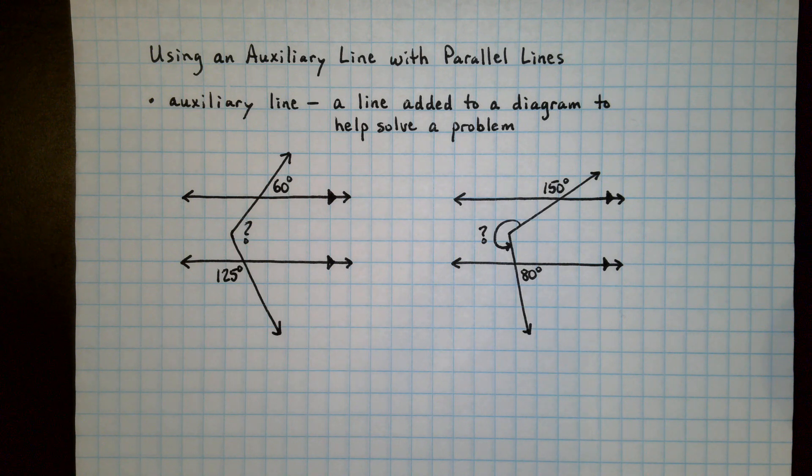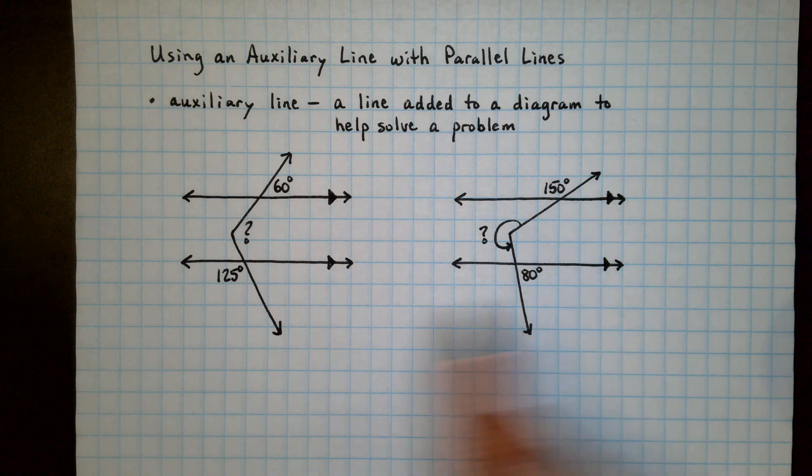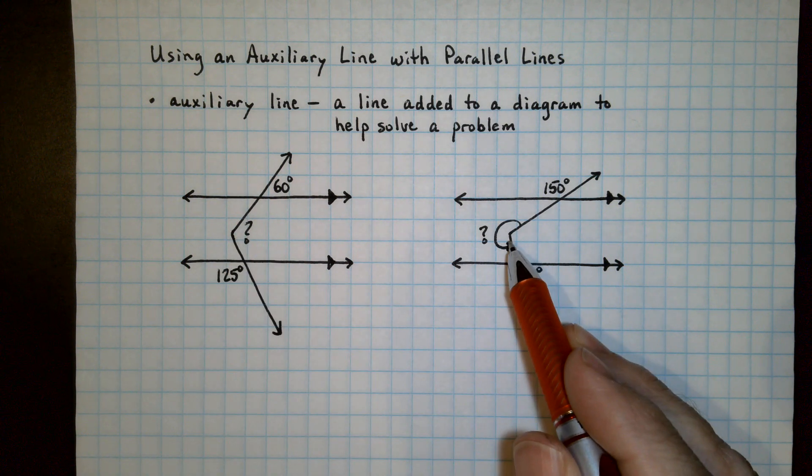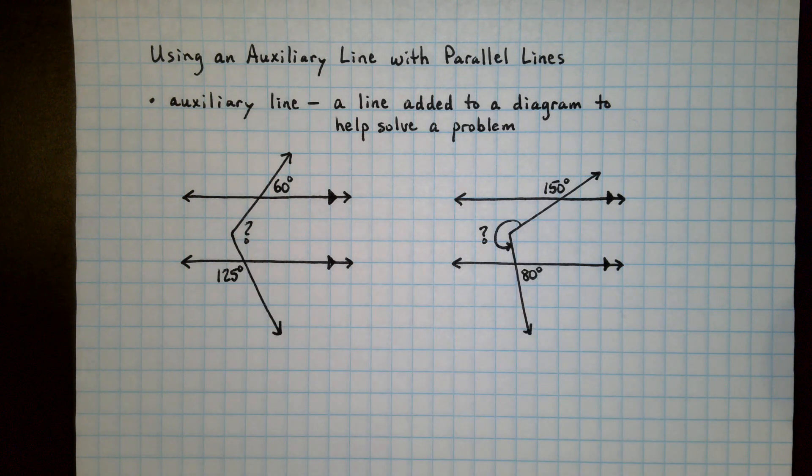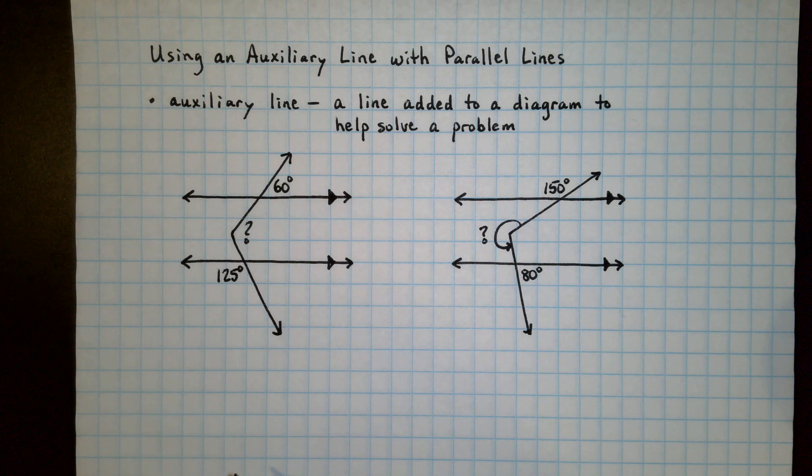So in these two problems here we have parallel lines and we have this angle that is inside or in between those two lines. There's no way that we can figure out what they are directly by adding or subtracting the existing angle measures.